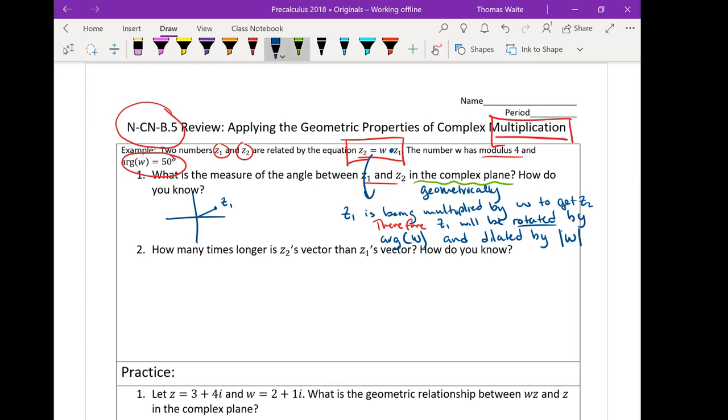So we know that Z1 is going to transform. We know it's going to rotate whatever the argument of W is. Well, wait a second. We know what the argument of W is. It gave it to us. Argument of W is 50 degrees. And it also gave us the modulus. The modulus of W was 4. So we know that Z1 will be rotated by 50 degrees and dilated by 4.